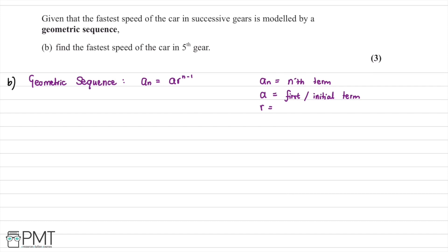In part B, we're told that the fastest speed of the car in successive gears is modeled by a geometric sequence, and we're asked to find the fastest speed in fifth gear. The formula for geometric sequences is that the nth term equals A multiplied by R to the power of (n minus 1). As with the arithmetic sequence, A is the first or initial term, but this time we have R instead of D — R is the common ratio between terms.